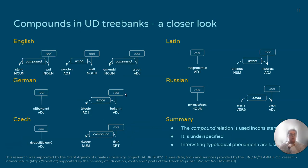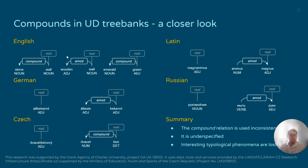The reason why the compound relation in English is so common is because it's used for all noun-noun dependencies, which in all the other languages usually is reserved for the nmod relation. However, adjective-noun dependencies are given the adjective modifier dependency, and this holds even in cases where the syntactic structures are visually very similar. Strangely enough, noun-adjective dependencies are also given the compound relation.